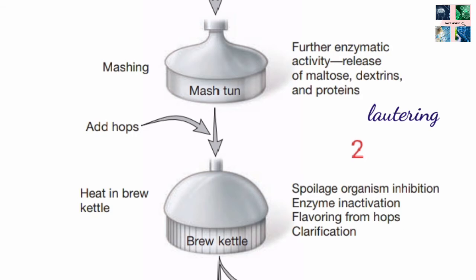The fourth step is lautering. The mash is filtered in the lauter tun, where the husk and wort are separated from the solid substances. The wort is then further used in the brewing process, whereas the spent grains are generally used as cattle fodder.